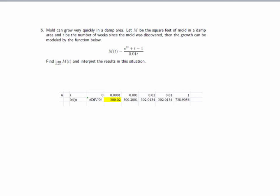One last one to look at is number 6 in that application section. Mold can grow very quickly in a damp area. Let m be the square feet of mold in a damp area and t be the number of weeks since the mold was discovered. Then the growth can be modeled by the function below. So I've given you the function, and I've asked you to find the limit of m of t as t approaches 0 and interpret the results in this situation. So the answer itself we can define by trying to figure out what's going on with the problem. So we know at 0, that's 0 weeks, no time has passed.